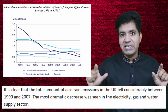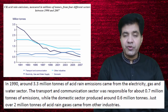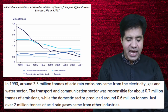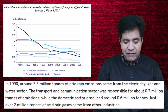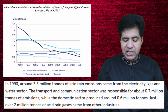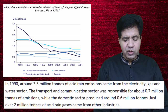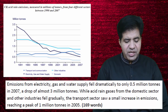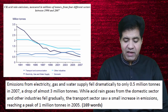Whenever I say a sentence, pause the video and observe that in the data. In 1990, around 3.3 million tons of acid rain emissions came from the electricity, gas and water sector. The transport and communication sector was responsible for about 0.7 million tons of emissions, while the domestic sector produced around 0.6 million tons. Just over 2 million tons of acid rain gases came from other industries.